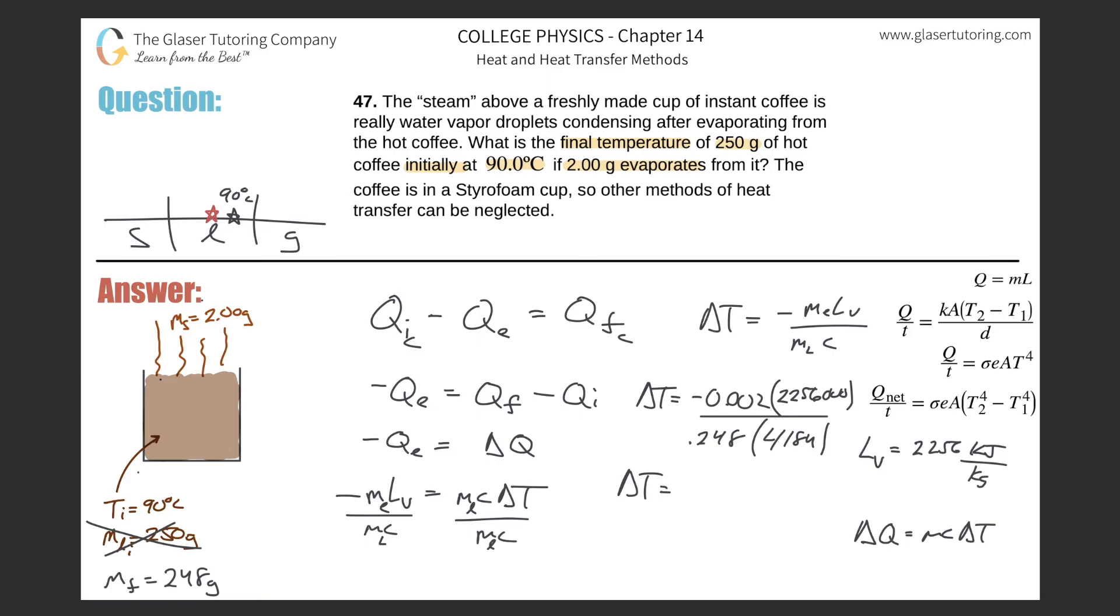We get a temperature difference of about negative 4.348 degrees Celsius. This makes sense—the temperature has dropped. We have to find the final temperature. If it started at 90 and dropped by this amount, take 90 and add that answer. The final temperature equals 85.7 degrees Celsius. That would be the approximate final temperature.